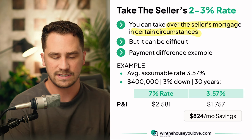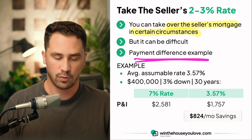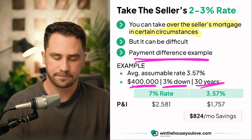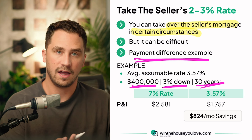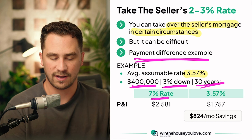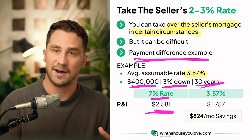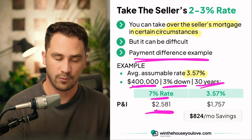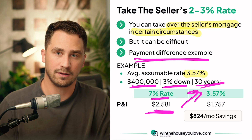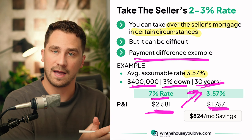Just as an example, let's take a look at the payment difference between a rate you might get now versus if you could assume the seller's mortgage. If we looked at an example of a $400,000 purchase with 3% down over 30 years, the average assumable rate in the US right now is 3.5%. If you got a rate today of around 7%, you'd be looking at a principal and interest payment of $2,581. If you could assume a rate of 3.57%, your payment would be lower by $824 per month, bringing you to $1,757. So if this is a strategy you can use, you absolutely want to take advantage of it.